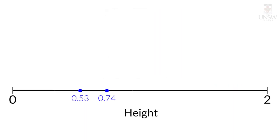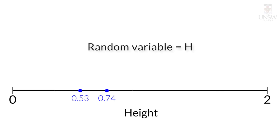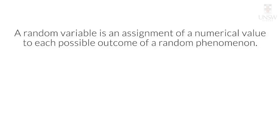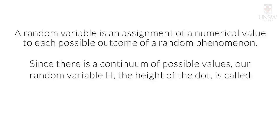Now we have added 0 and 2 to our line for our random variable h, the height of the dot. A random variable is an assignment of a numerical value to each possible outcome of a random phenomenon. Since there is a continuum of possible values, our random variable h, the height of the dot, is called continuous.